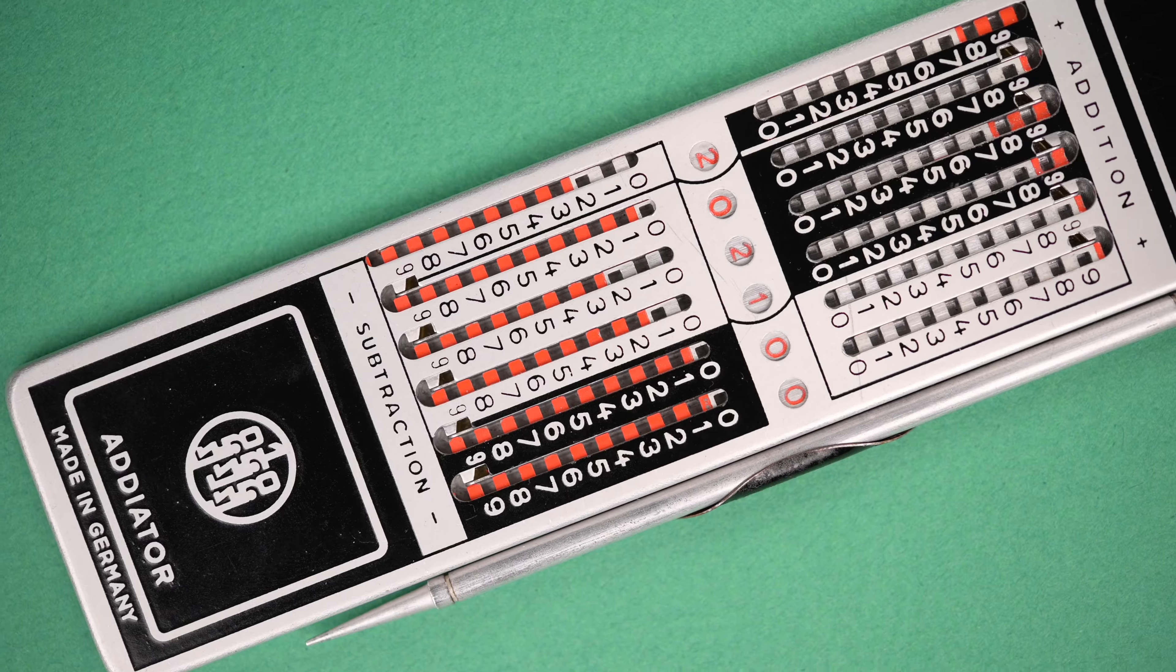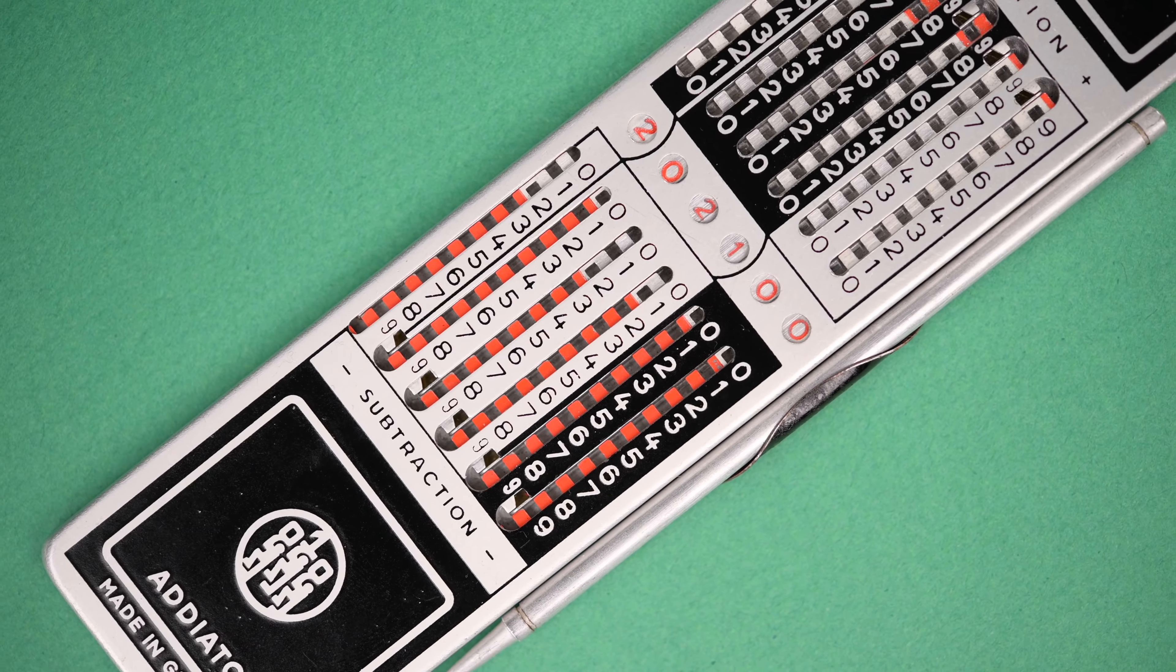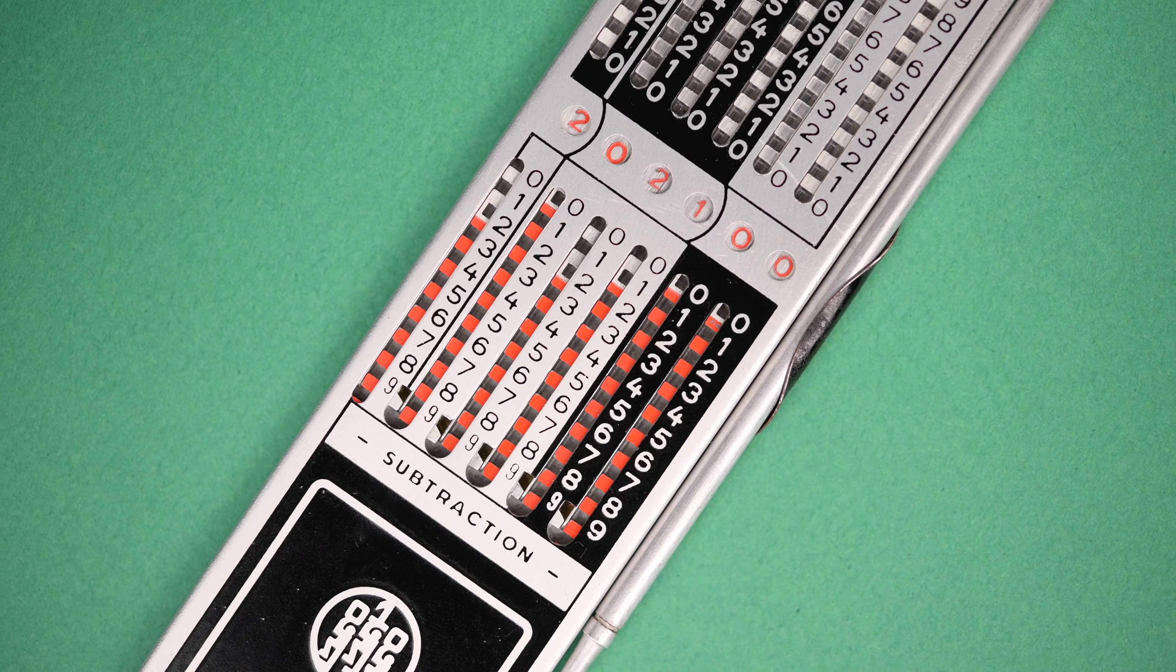The Adiator was made between the late 1950s and the early 1970s. I don't know much about the Instamatic, but I'm guessing it's from the same time period.